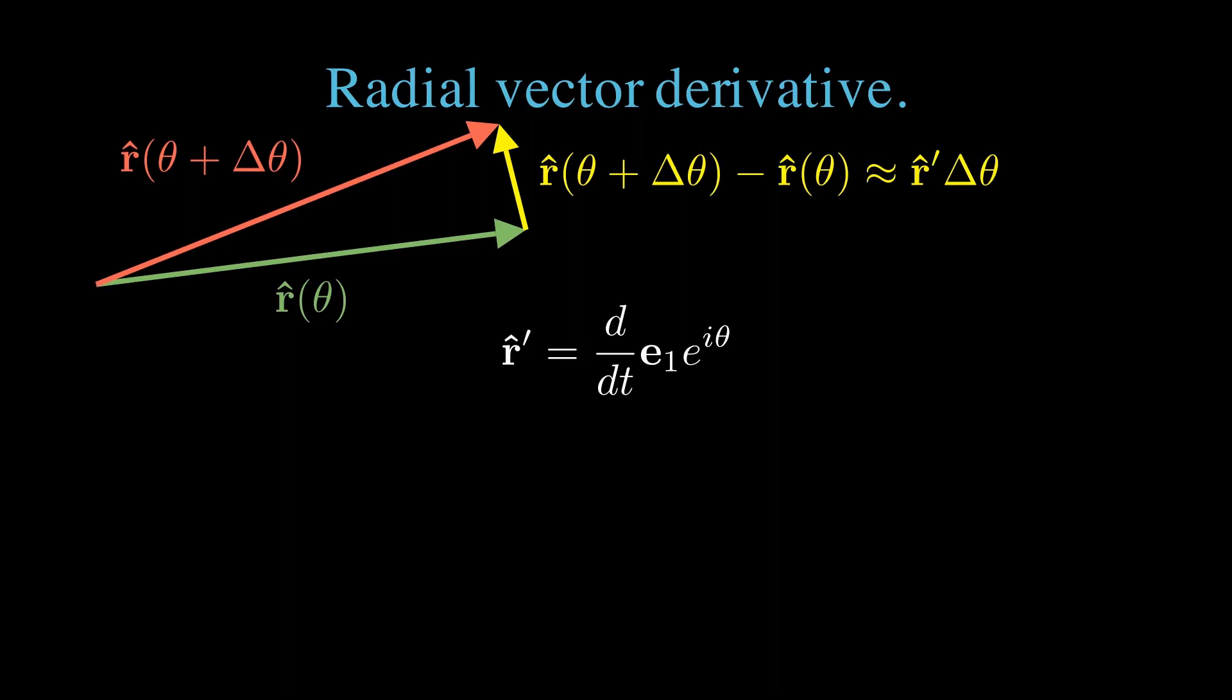The difference between these two vectors is tangentially oriented. We can compute the derivative easily from our exponential representation. All of the time dependence is implicit through the angle theta. We bring down a factor of i theta prime.